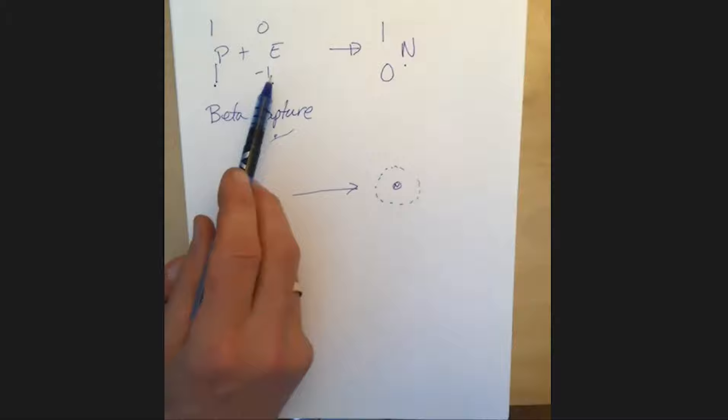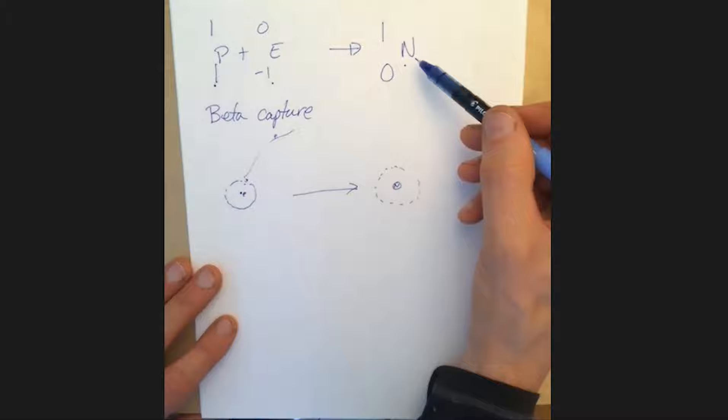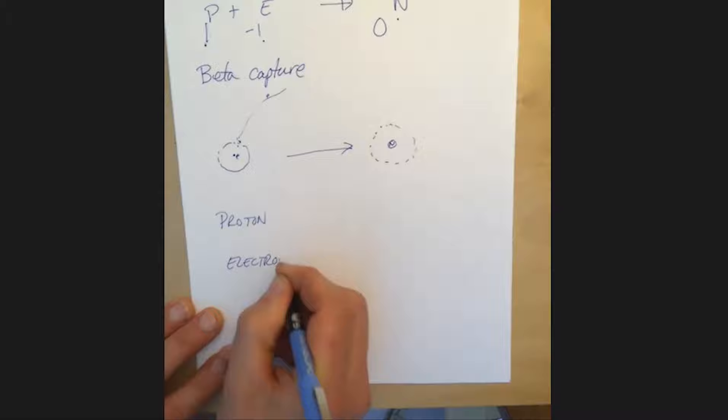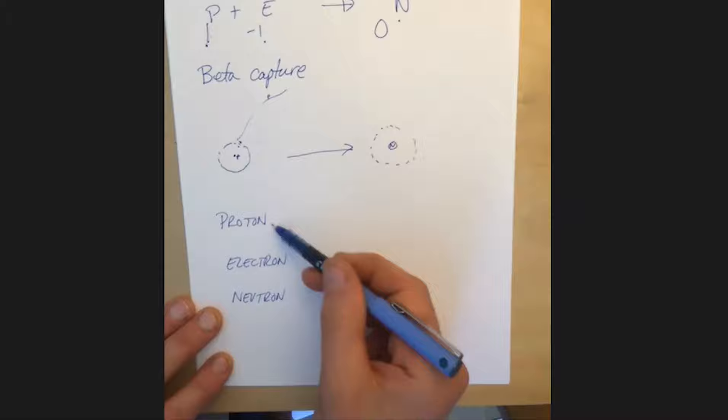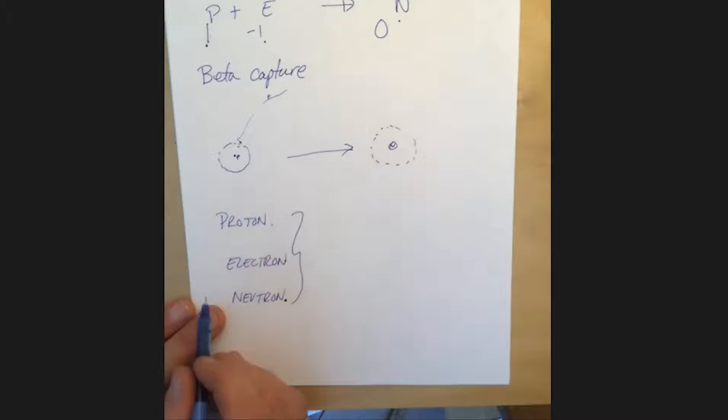One of the things I take from this is that if you can have an electron and a proton form a neutron, that says to me that a neutron is not one of the fundamental subatomic particles. We started off by saying proton, electron, and neutron. But if these two things can turn into one of these, then there must be something about all of these that is more fundamental than they are themselves.